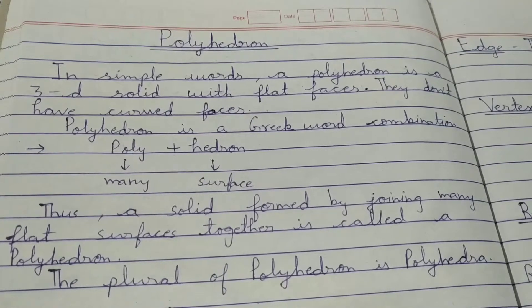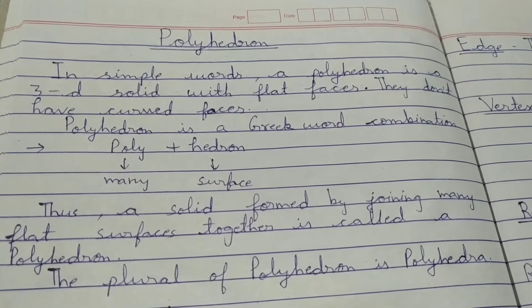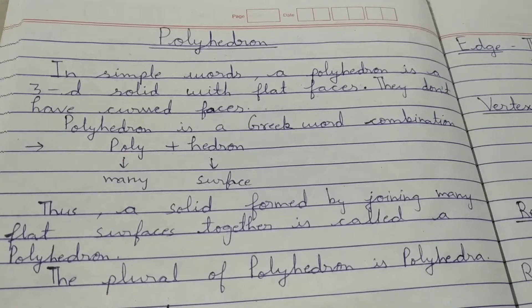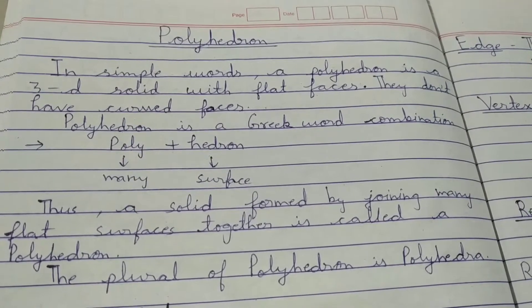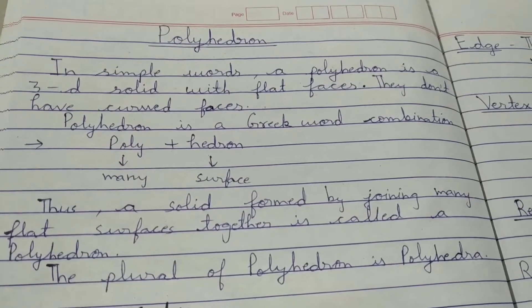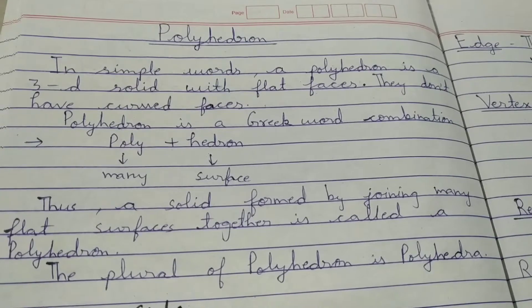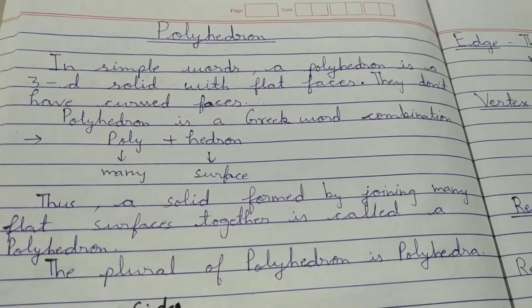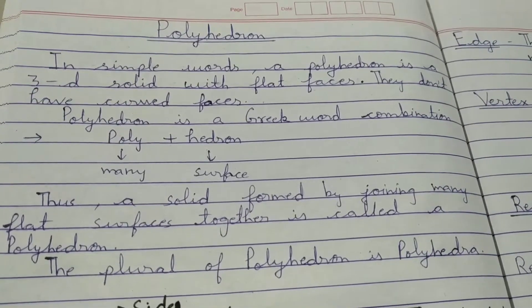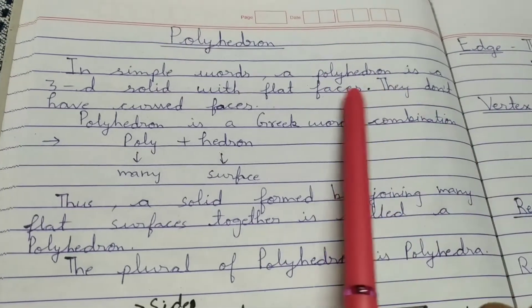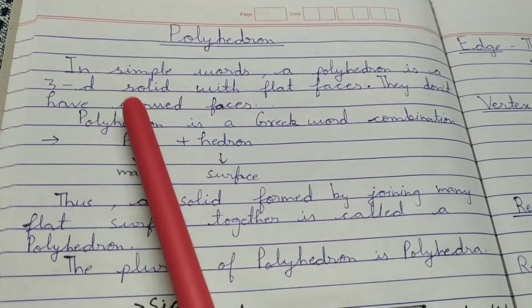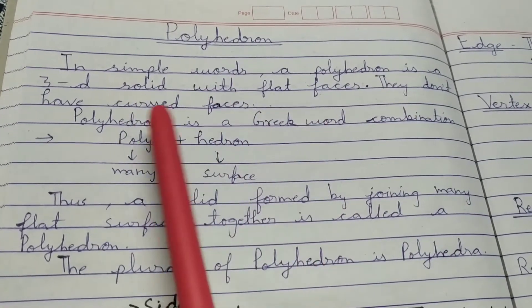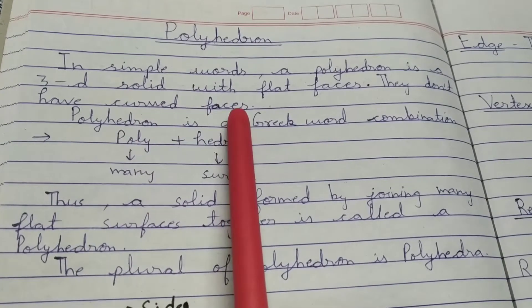Polyhedron. All of you must be familiar about polygons. Polygons are two dimensional closed shapes made up of straight line segments. Polyhedrons are just the three dimensional counterparts of polygons. So in simple words, a polyhedron is a three dimensional solid with flat faces. They don't have curved faces.